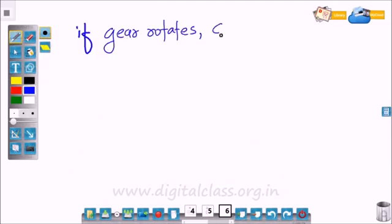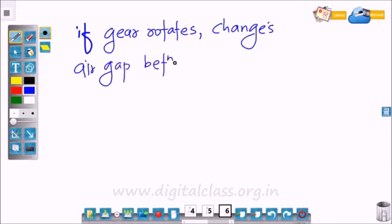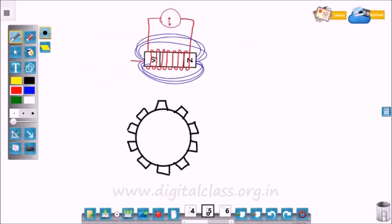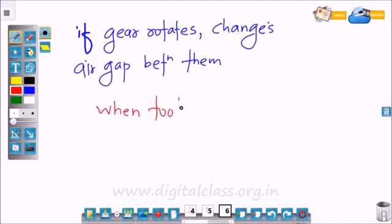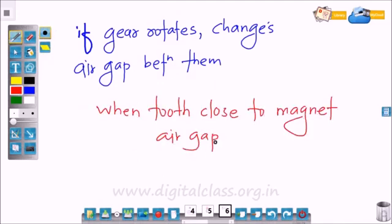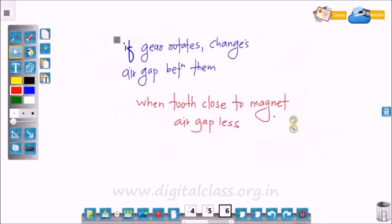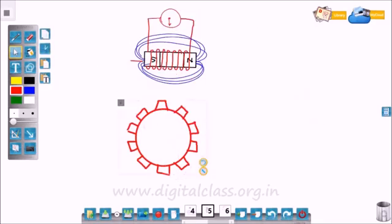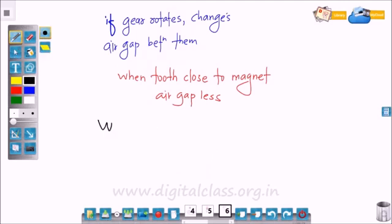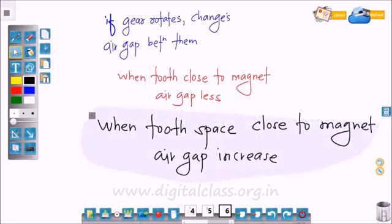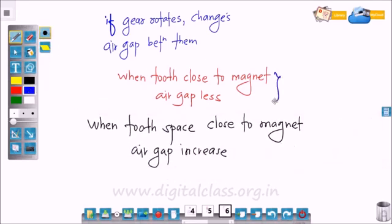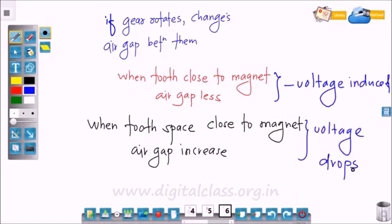If the gear rotates, it changes the air gap between the gear and permanent magnet. When a tooth is closer to the magnet, the air gap is less. When the tooth space between teeth is close to the magnet, the air gap increases. This change in air gap causes a change in reluctance.